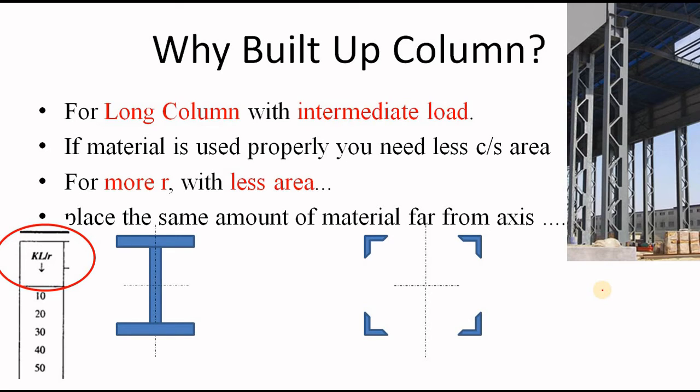And the second option is, use a built-up section where you can place your material in such a manner that the r is maximum or the KL by r is less or the design strength is maximum. So naturally, the requirement of cross-sectional area is less. So which one is economical? Obviously, the second one or this built-up column section. That's the reason why we use built-up section for long column.